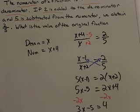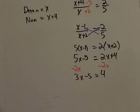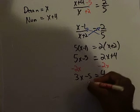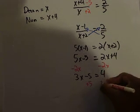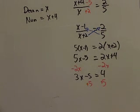Now I'm going to add five to both sides. Looks like this is going to give me three x is equal to nine.